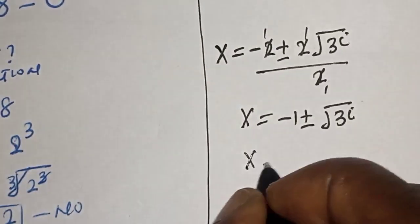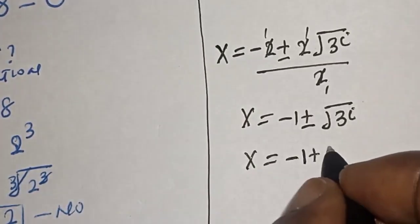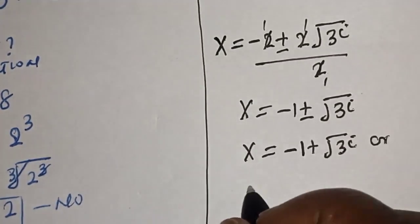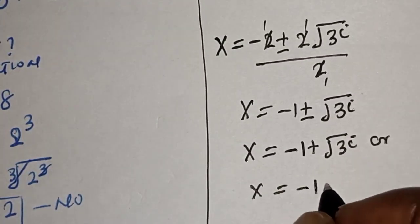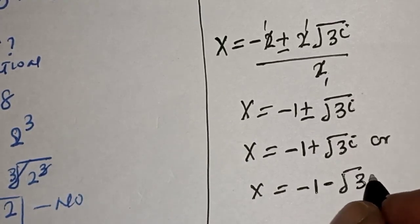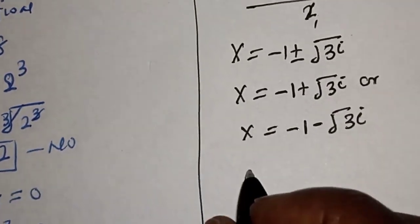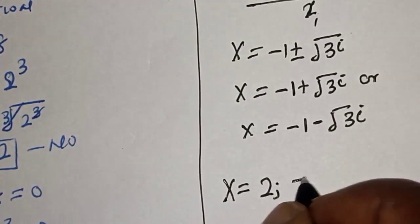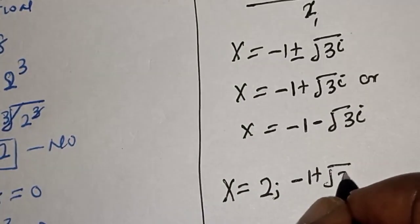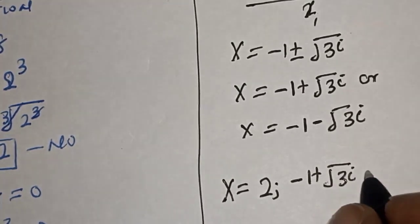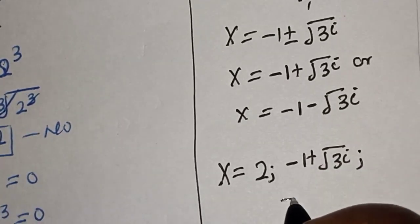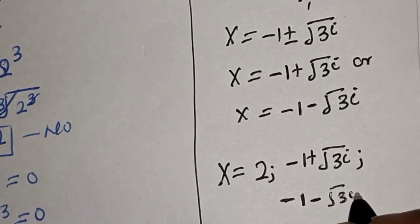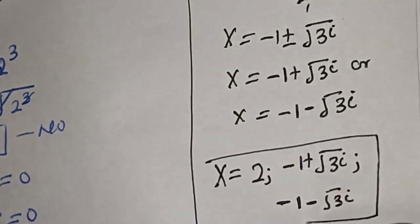Therefore s is equal to minus 1 plus root 3i, or s is equal to minus 1 minus root 3i. Our final answers are s is equal to 2, minus 1 plus root 3i, and minus 1 minus root 3i.